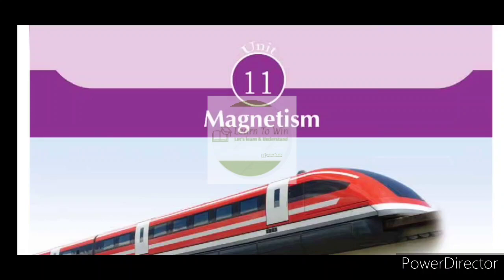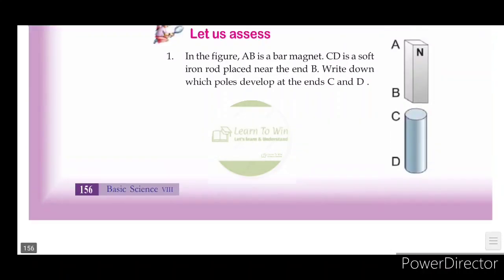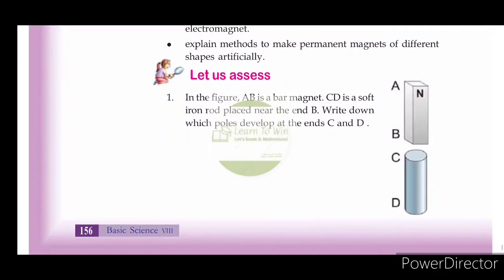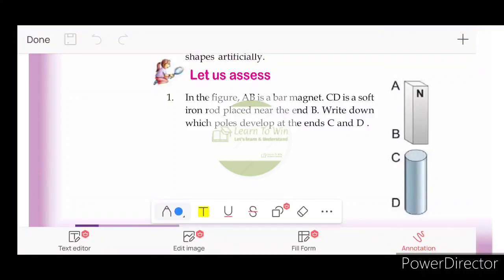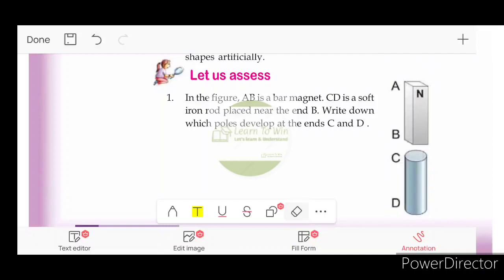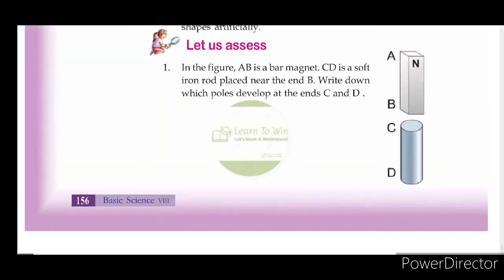How to explain the Letters S questions. First question: In the figure, A and B is a bar magnet. C and D is a soft iron rod placed near end B. Write down which poles develop at end C and D. C and D is the iron rod — it's a 2-mark question.